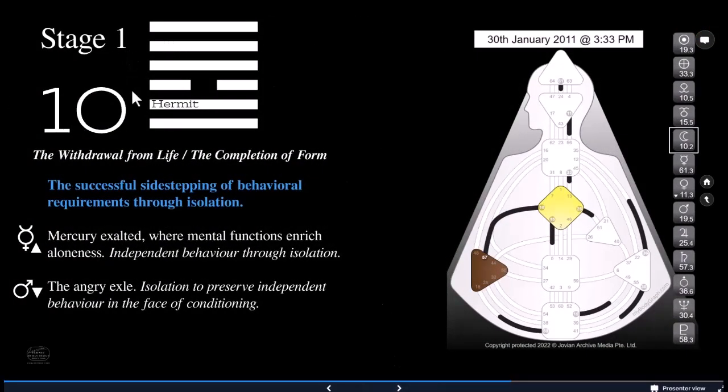Stage one is right here at the top, where we can see the 30th of January 2011, when Ra went into his stage. So we're going to go explore them piece by piece, following the moon. So here was stage one, gate 10, line two, the hermit, the withdrawal from life, it's the completion of form. Learning the successful sidestepping of behavioral requirements through isolation. Mercury exalted where mental functions enrich aloneness. This is independent behavior through isolation. Mars in detriment, the angry exile. Isolation to preserve independent behavior in the face of conditioning.